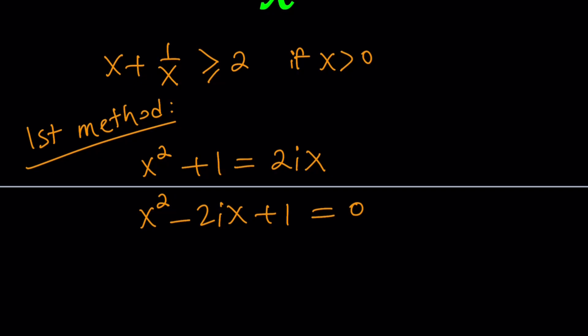That's going to give me x squared plus 1 equals 2ix. If you multiply by x, x is going to cancel out. And then you can bring everything to the left and write this as x squared minus 2ix plus 1 equals 0. I want to put the x term in the middle because I want to write this as a quadratic in standard form. And then, guess what? Use the quadratic formula to solve it.